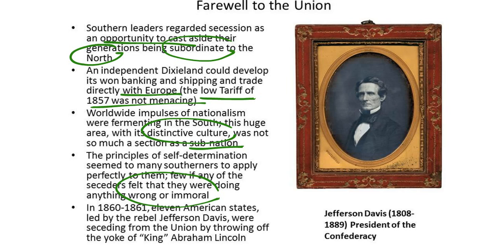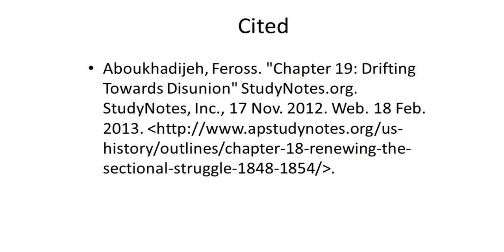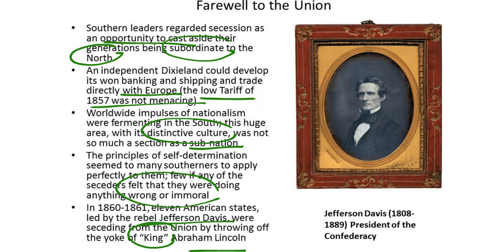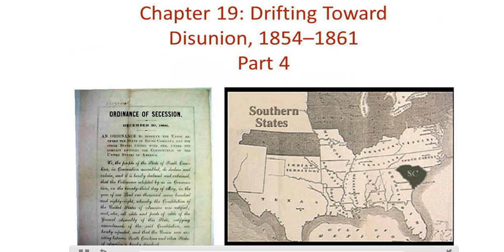In 1860 to 1861, 11 American states, led by the rebel Jefferson Davis, were seceding from the Union by throwing off the yoke of King Abraham Lincoln. We'll discuss the secession of the Southern states and the beginnings of the Civil War in our lessons in class.